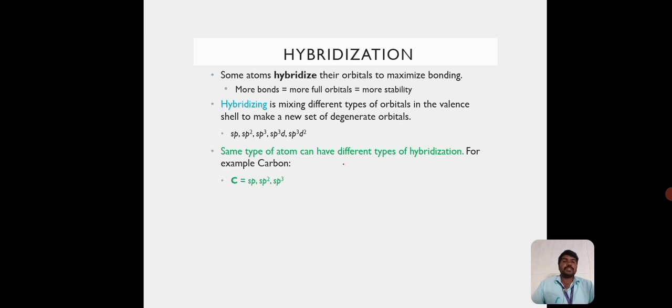Types of hybridization include sp, sp², sp³, sp³d, and sp³d². The same type of atom can have different types of hybridization. For example, carbon can have sp, sp², and sp³ hybridization.